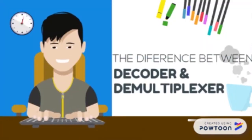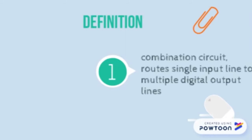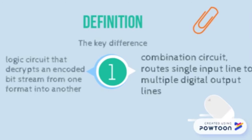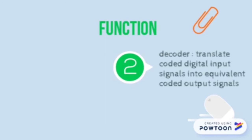The difference between decoder and demultiplexer. First, definition: the key difference between a decoder and a demultiplexer is that the former is a logic circuit that distributes an encoded bitstream from one format into another. Second, function of decoder and demultiplexer: a decoder is the inverse function of an encoder, which is to translate coded digital input signal into equivalent coded output signal.